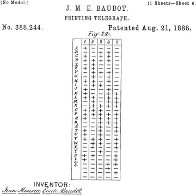It was a five-bit code, with equal on and off intervals, which allowed for transmission of the Roman alphabet and included punctuation and control signals. It was based on an earlier code developed by Carl Friedrich Gauss and Wilhelm Weber in 1834. It was a grey code, when vowels and consonants are sorted in their alphabetical order.